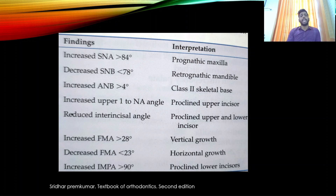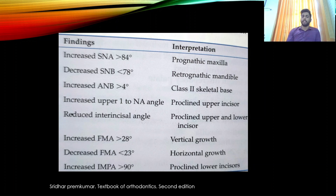The ANB angle has a normal value of 2 ± 2 degrees; an increased ANB greater than 4 degrees indicates a Class 2 skeletal base. An increased upper incisor to NA angle indicates proclined maxillary incisors. A reduced inter-incisor angle indicates proclination of both upper and lower incisors.